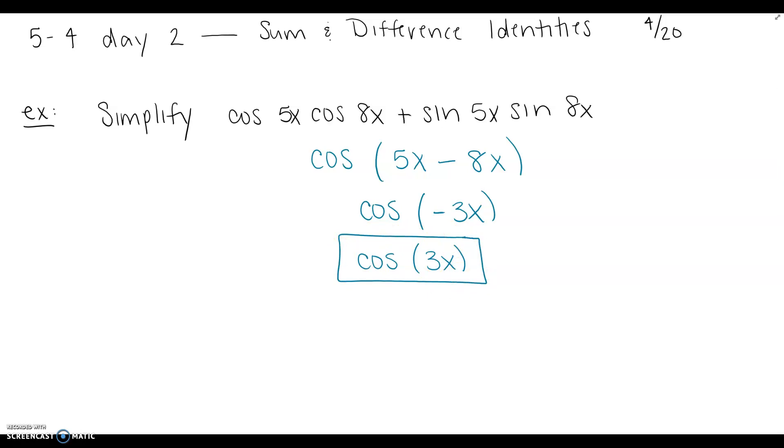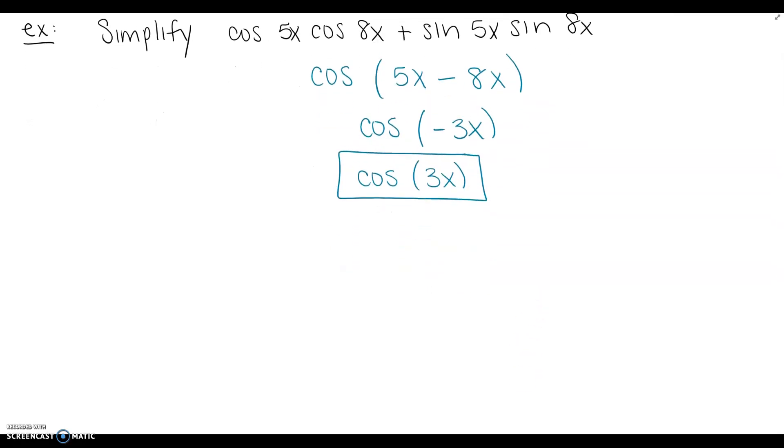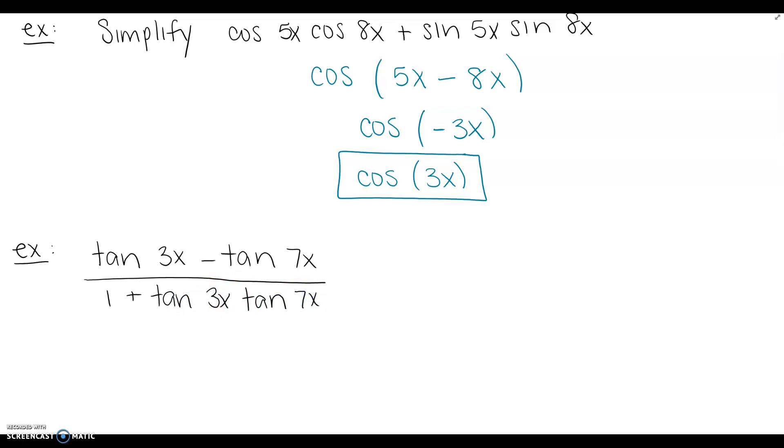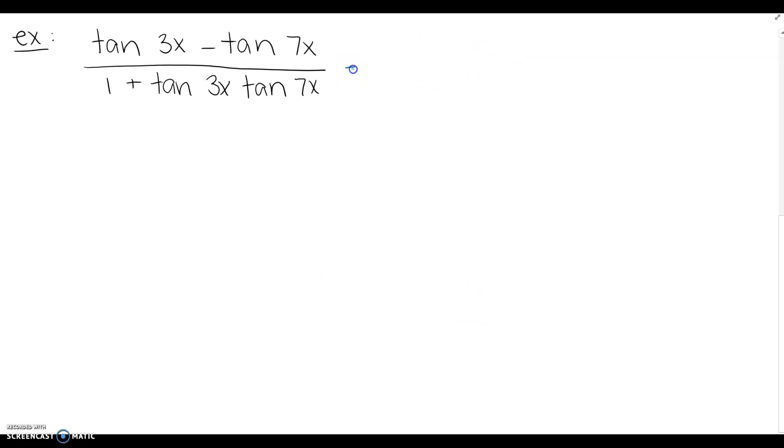Let's do one more example before you try. I would like us to do tangent of 3x minus tangent of 7x all over 1 plus tangent of 3x times tangent of 7x. Again, first step, look at the identities and determine which one we can use. Because we've got tangent minus tangent over 1 plus, that's going to be the difference for tangent.